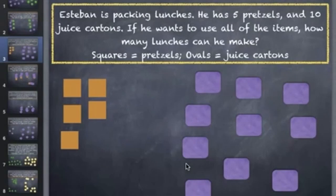The next question starts, Esteban is packing lunches. He has five pretzels and ten juice cartons. If he wants to use all the items, how many lunches can he make? The squares represent pretzels, and the ovals represent juice cartons. Again, you actually work the problem on the next slide.